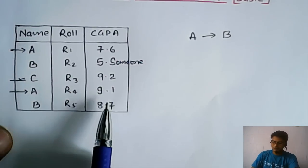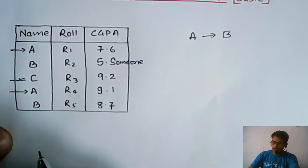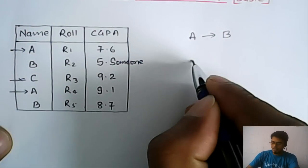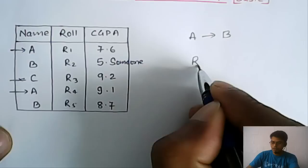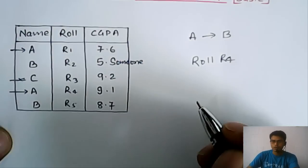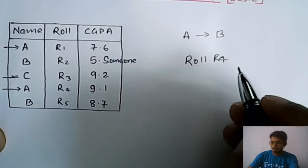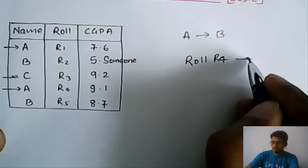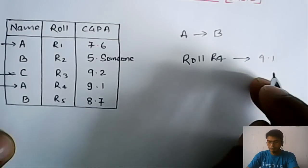something which can uniquely determine the next attribute. If I ask what is the CGPA of roll number R4, then you can determine, yes, R4's CGPA is 9.1.